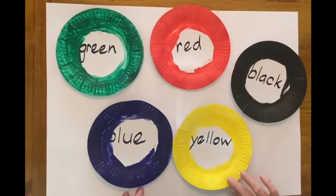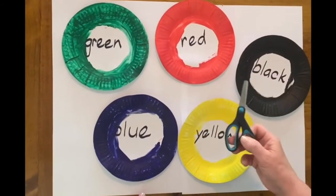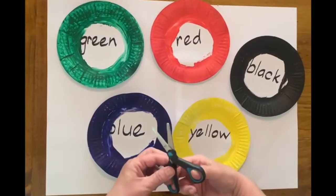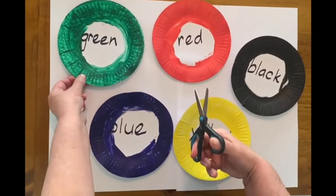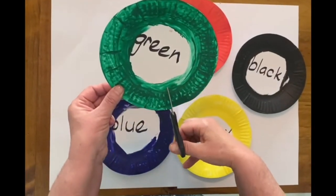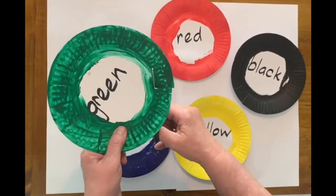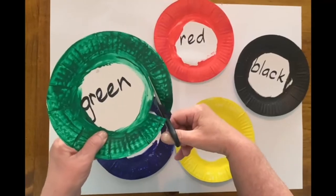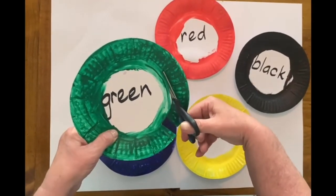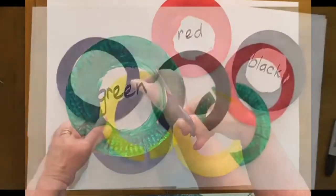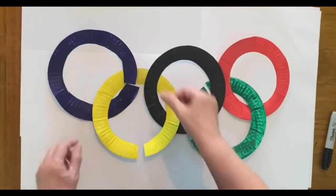When your paint's dry, you cut out the ring. So one snip and then cutting around the circle on the inside. You do that for all your paper plates.